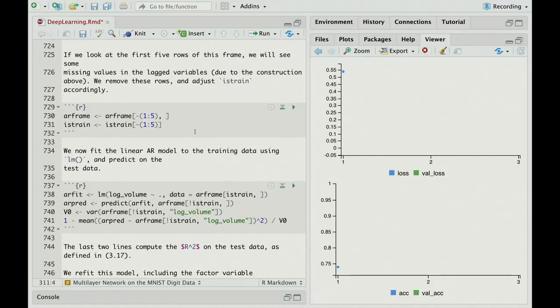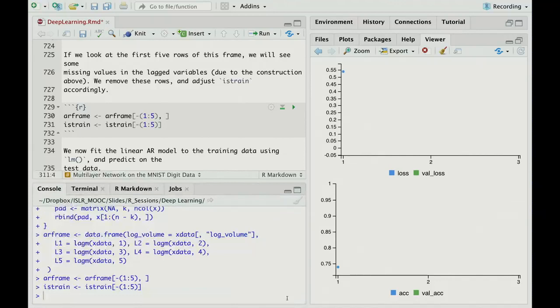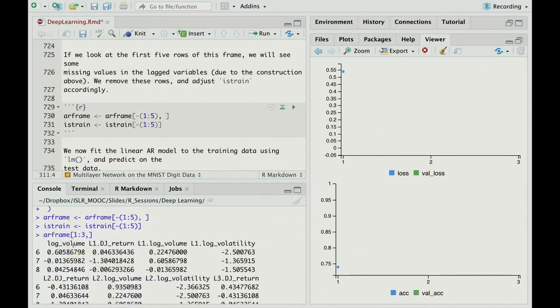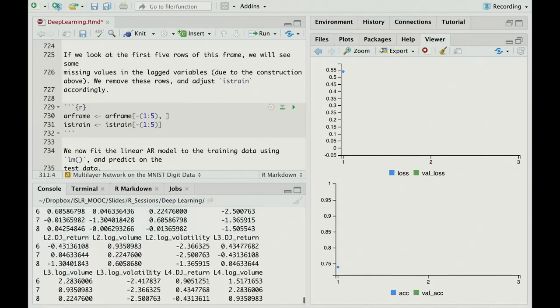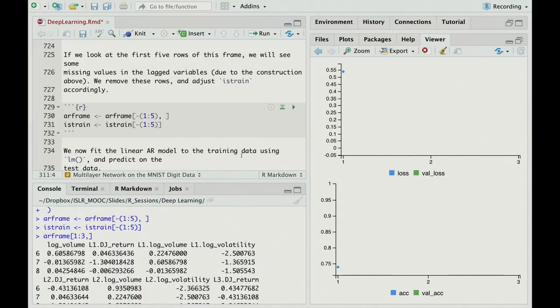Now we'll just fit a linear regression model. I think at this point, let's just show some of the rows of AR frame. I'll just look at the first three rows. So there's the response. It's going to be log volume. And now you see lag one Dow Jones return, lag one log volume, lag one log volatility, lag two, and so on. And so it's created those lags for us, up to lag five.